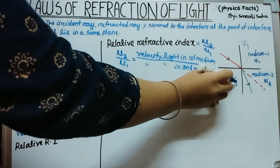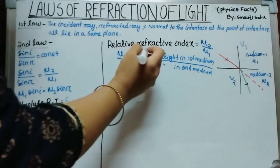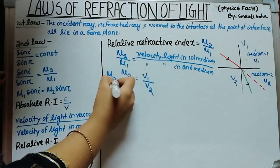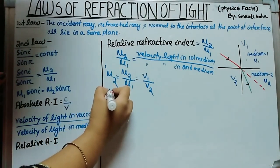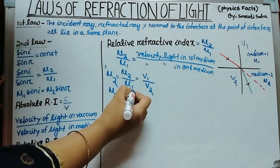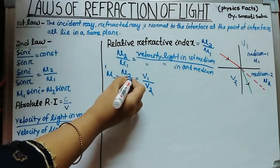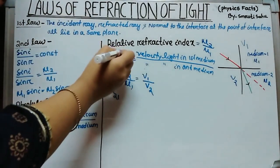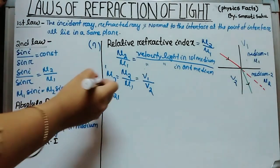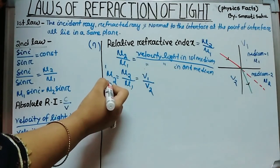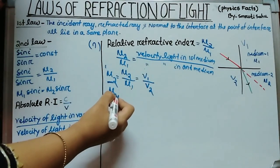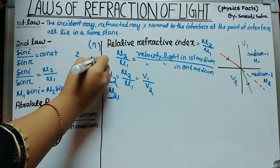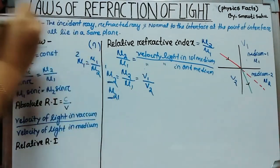The ratio of refractive index of the second medium to the first medium equals the ratio of velocity of light in the first medium to the velocity of light in the second medium — that is mu2 by mu1 equals v1 by v2. In some books, the relative refractive index is written as ₁μ₂ (mu2 by 1), and mu1 by 2 means the refractive index of the first medium with respect to the second medium.